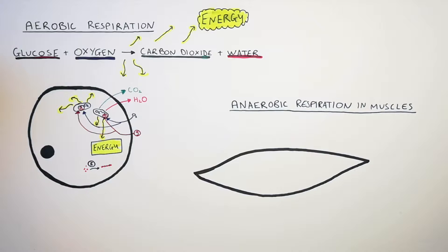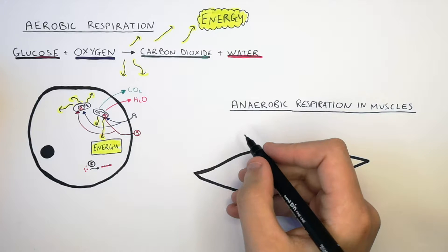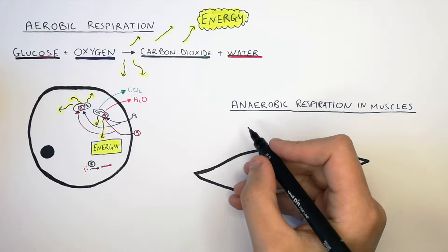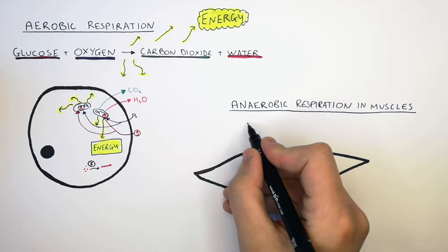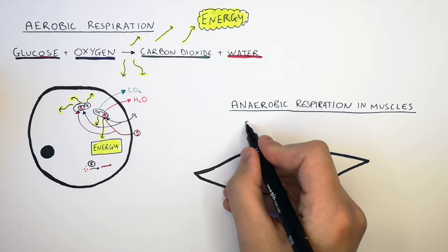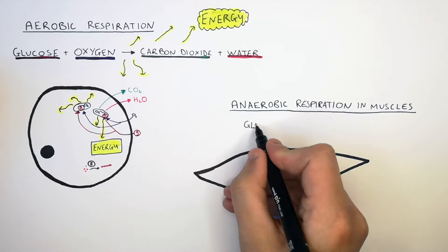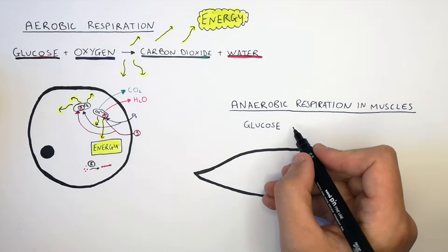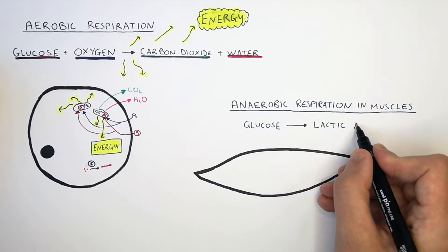Anaerobic respiration in muscles occurs when there is not enough oxygen being supplied to the respiring muscles, normally during vigorous exercise. So anaerobic respiration is the incomplete combustion of glucose, and the product of anaerobic respiration is lactic acid.